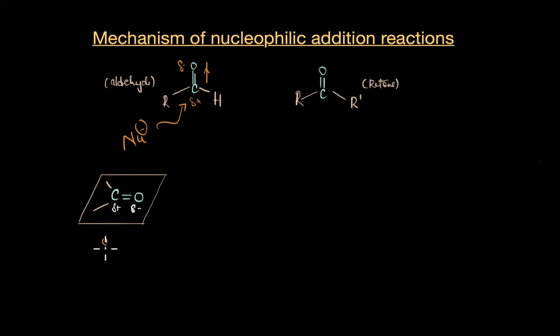It has an sp2 hybridization and all the atoms lie on the same plane. Now when a nucleophilic species attacks this electron deficient carbon atom of the carbonyl group, delocalization of pi electron takes place and the electron density shifts towards the more electronegative oxygen atom and this produces an intermediate as you can see here.